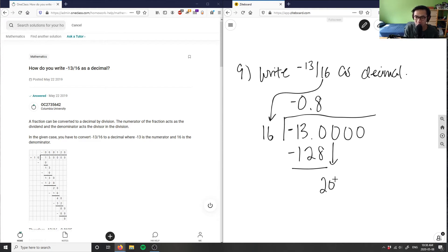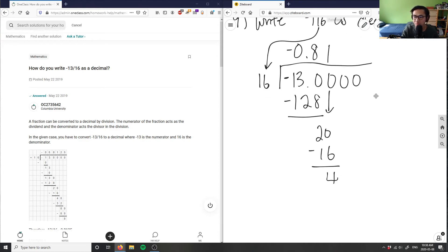I bring down the 0 here. What goes into 20 here? Again, only 1 goes into 20 here. So 1 times 16 here is obviously 16. And then I will have a 4 here. 20 minus 16 here is 4. I can bring down the 0 again.